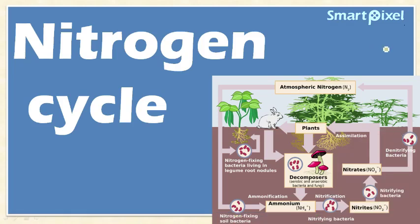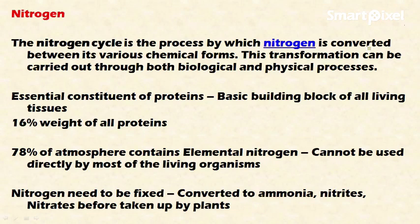Welcome friends. In this video let's discuss the nitrogen cycle. The nitrogen cycle is an example of a gaseous cycle. It is a process by which nitrogen is converted between various chemical forms, and this transformation can be carried out through both biological and physical processes — that is, biotic and abiotic factors.